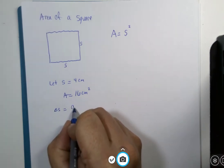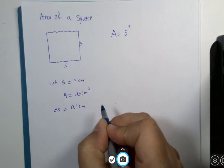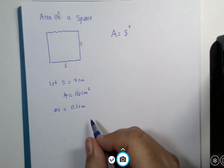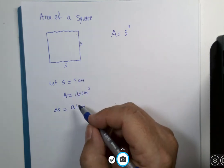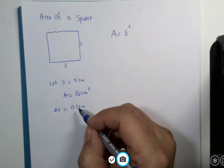Now, if both sides are off by 0.1 centimeters, then this area could be actually 4.1 centimeters squared.